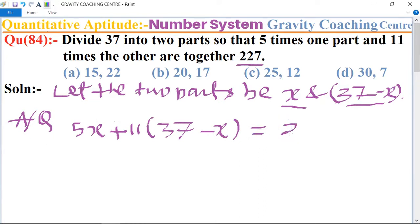This implies that 5x plus 407 minus 11x equal to 227. So 11 minus 5 equal to minus 6x equal to 227 minus 407.